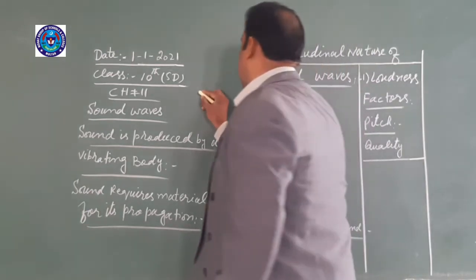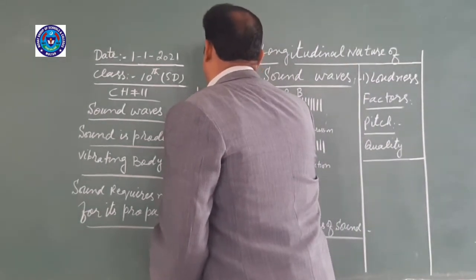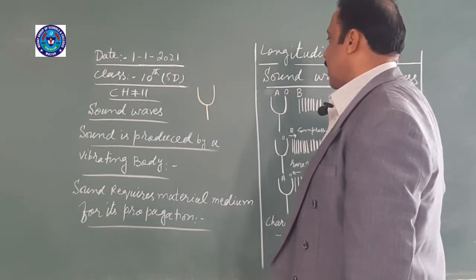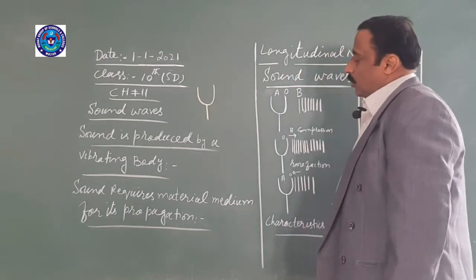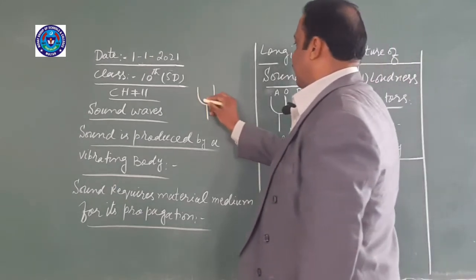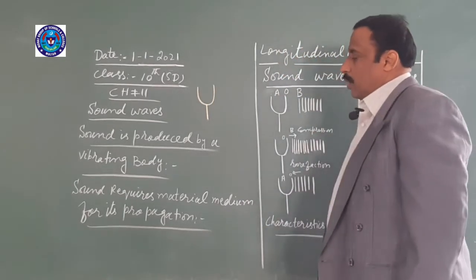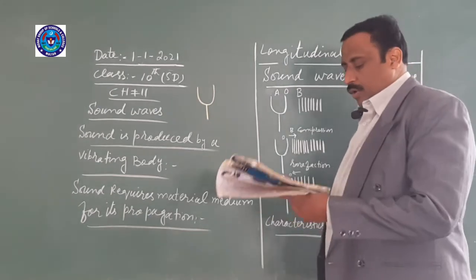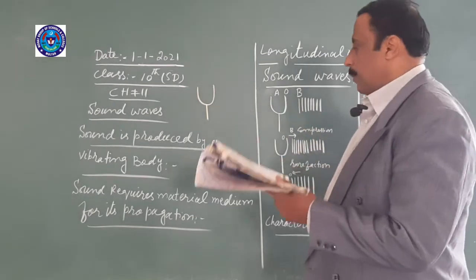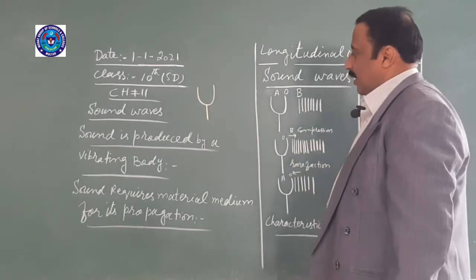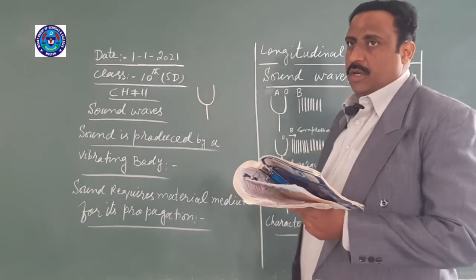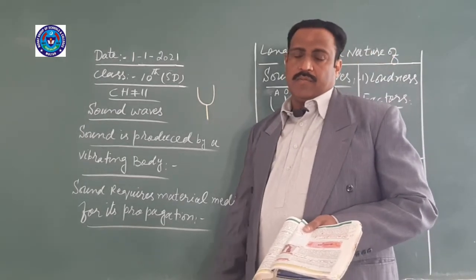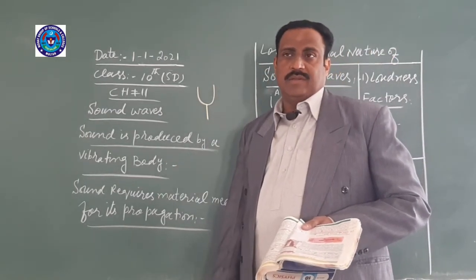In a school laboratory, we use an instrument which we call tuning fork. The sound is produced by a vibrating body. What is a tuning fork? It has two prongs and one stem. The tuning fork is used to produce a particular sound.